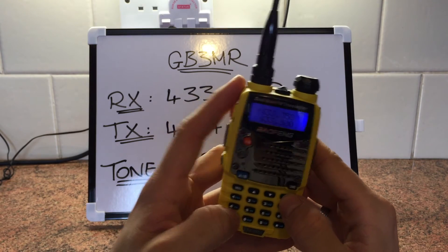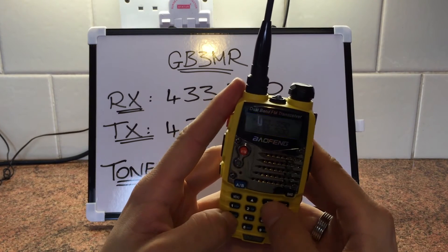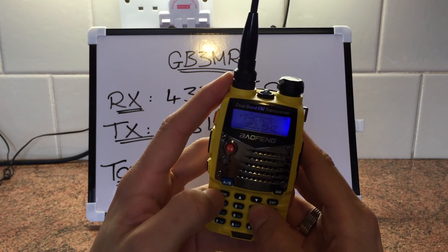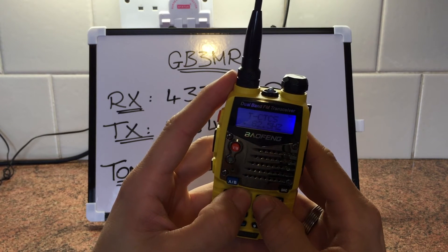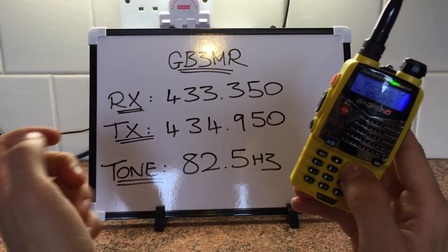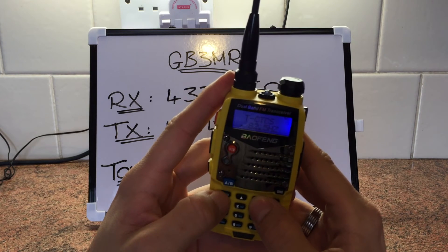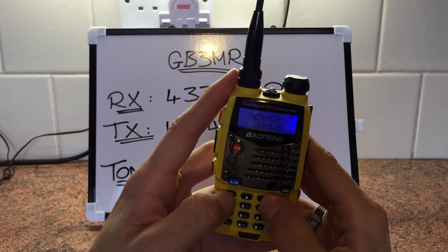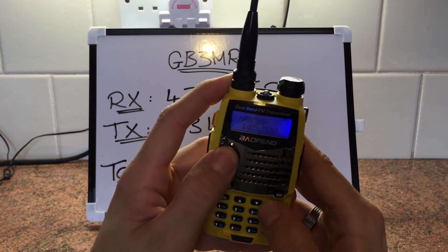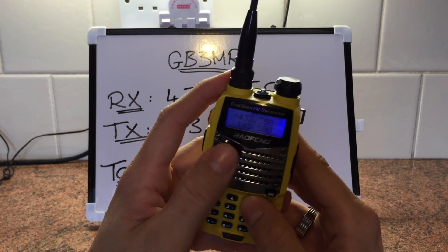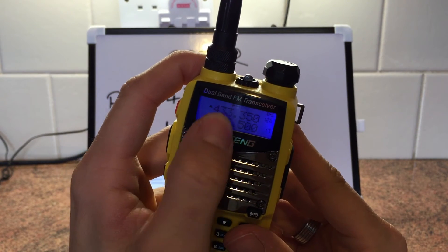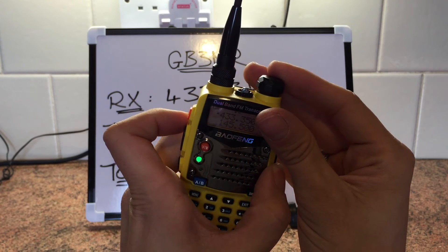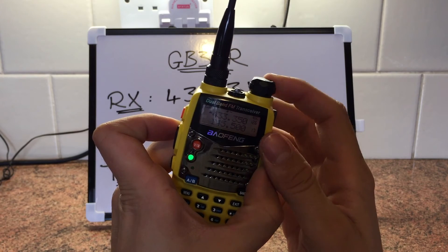Then you enter the input frequency which is 434.950. Then press Menu, 1 and 3, which takes you to the CTCSS. Press Menu again, scroll up and down to find the CTCSS you want — in this case 82.5 Hz. When you've got that, press Menu and then 27. You're already on channel 126, so press Menu, Menu, and Escape.